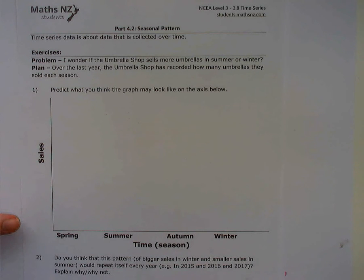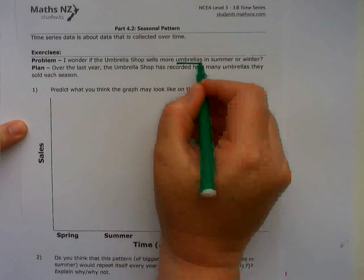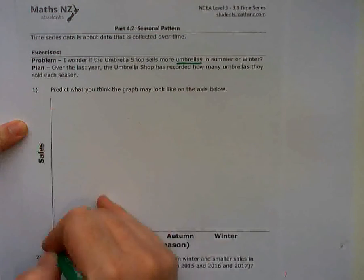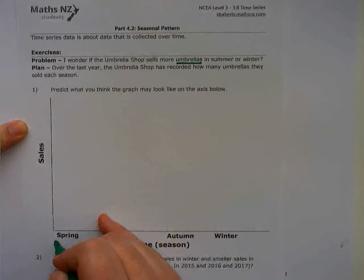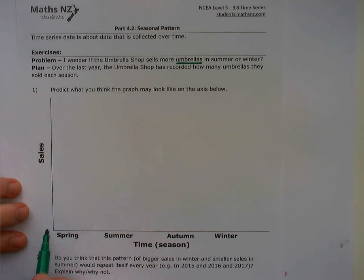So what we've got here is we've got sales of umbrellas on our axis up and down here, and we've got on our horizontal axis, we have our seasons, so we've got spring, summer, autumn and winter.